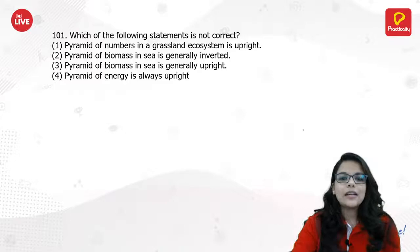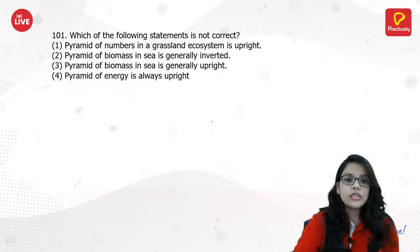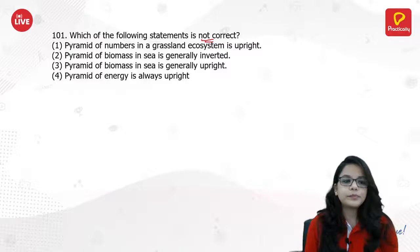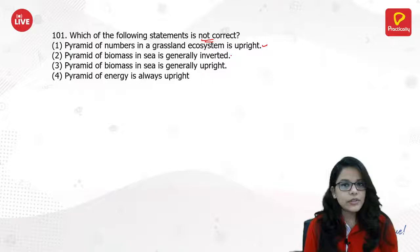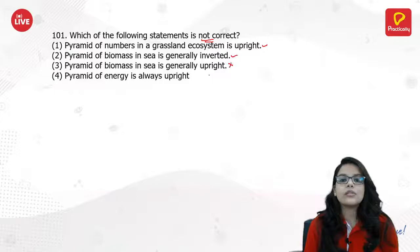The first question asks: which of the following statements is not correct? We have to find the wrong statement. Pyramid of numbers in a grassland ecosystem is upright — this seems correct. Pyramid of biomass in sea is generally inverted — this is correct. Pyramid of biomass in sea is generally upright — this is not correct. Pyramid of energy is always upright.